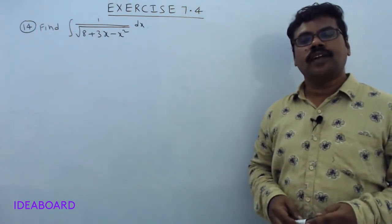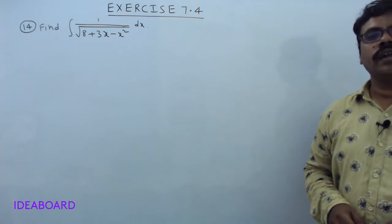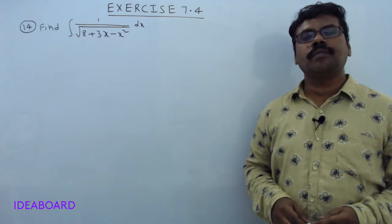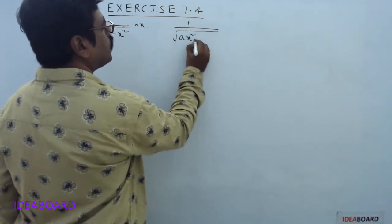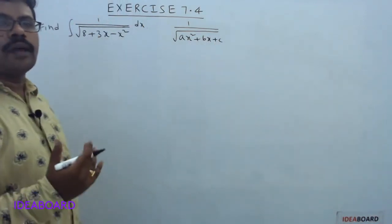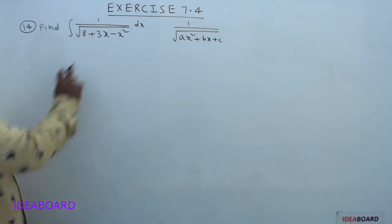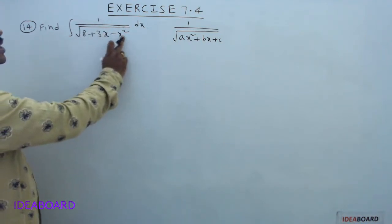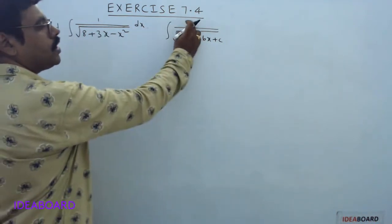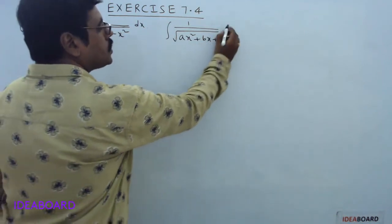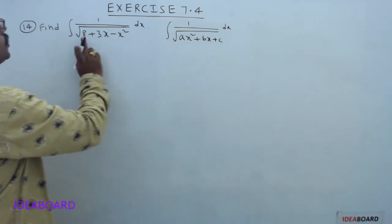Hi everyone, welcome to Idea Board Video Classes. In the previous video, we discussed how to evaluate integrals of the type 1 divided by square root of ax² plus bx plus c, and some problems. Today also I am going to explain some problems on this model. The given question is: find the integral of 1 divided by square root of 8 plus 3x minus x² dx. Clearly, the given problem is of the form integral 1/√(ax²+bx+c) dx, where a = -1, b = 3, c = 8.